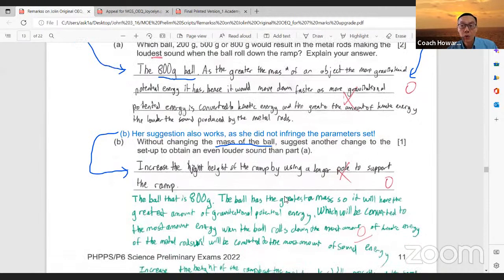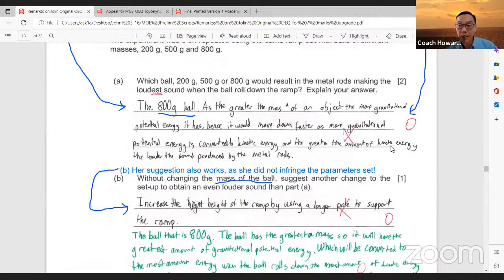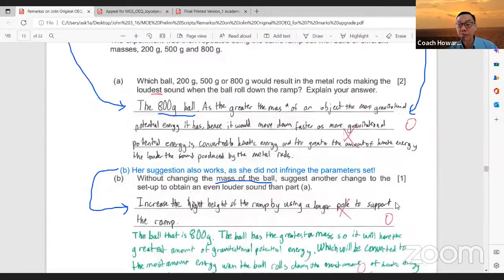She actually obeyed the parameters. She said, increase the height of the ramp by using a longer pole to support the ramp. Here, they did not forbid using other apparatus without changing the mass of the ball. So she did not change, but she used a longer pole. Perhaps during the examination setting, the examiner might have forgotten to put in this extra parameter without using other apparatus.